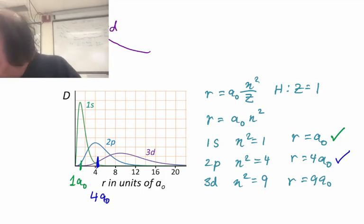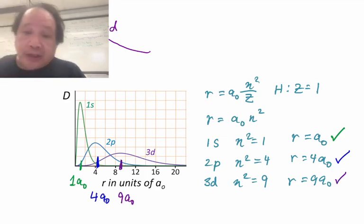And here's 3d. 3d comes from the maximum around here, which is at 9a0. And indeed, it's at 9a0.